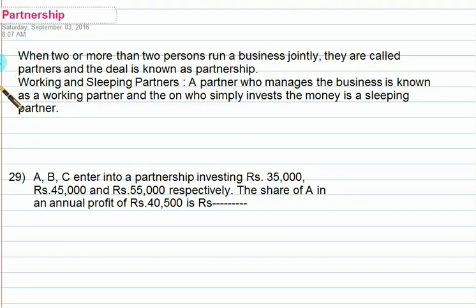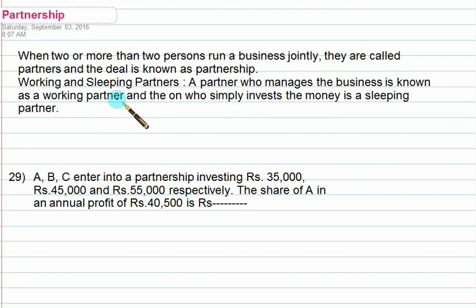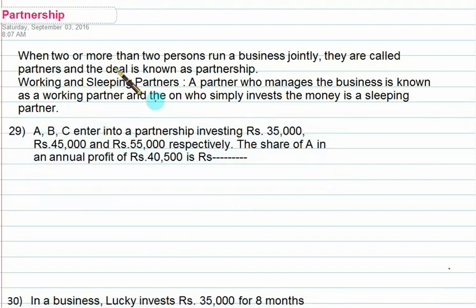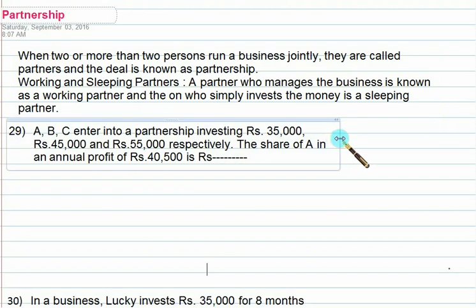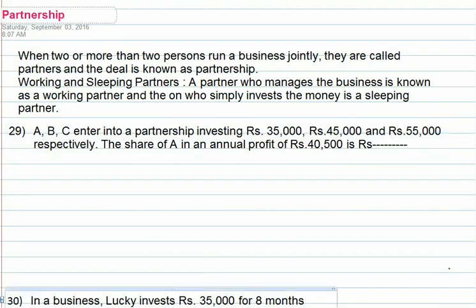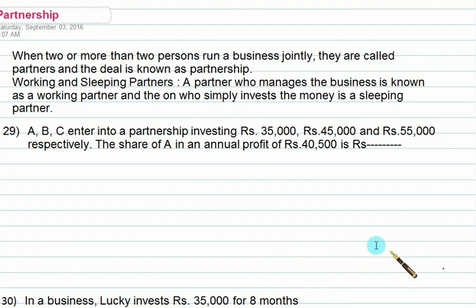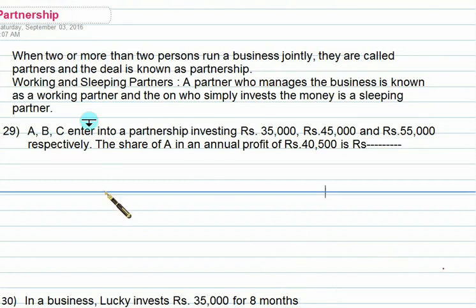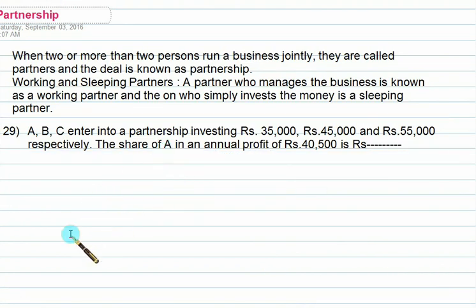In this video we'll go through partnerships. When two or more persons run a business jointly, they are called partners and the deal is known as a partnership. We may have working and sleeping partners. A partner who manages the business is known as a working partner, and the one who simply invests money is a sleeping partner. Calculations are based on investment, period, and profit share.